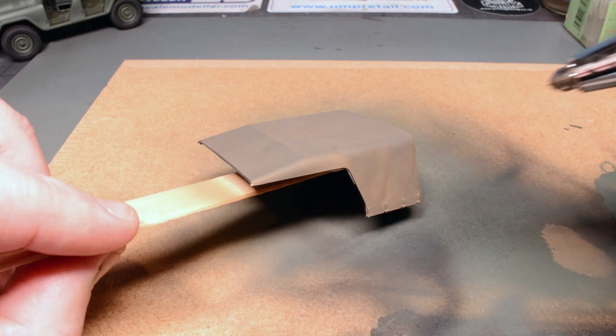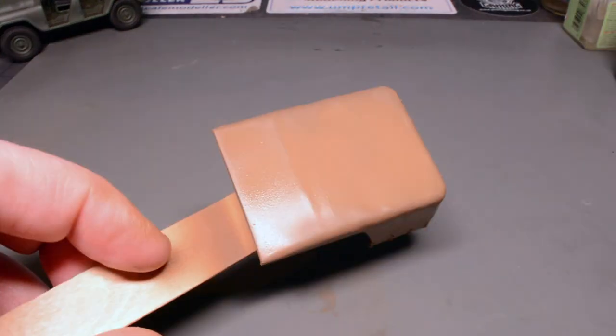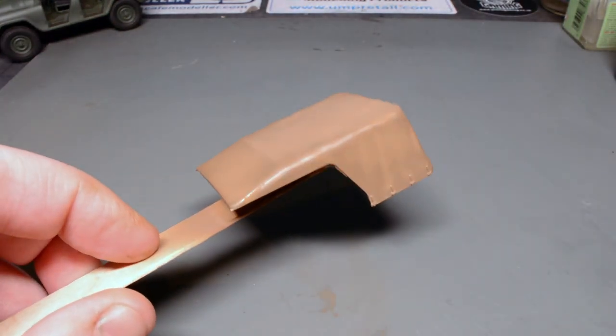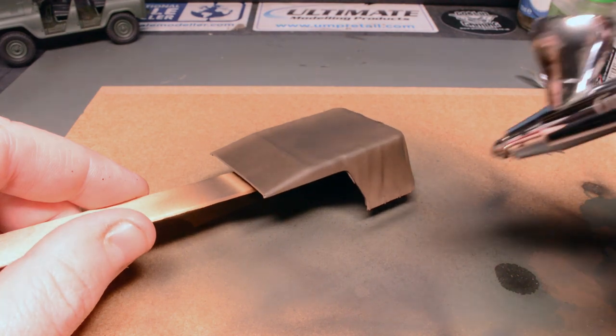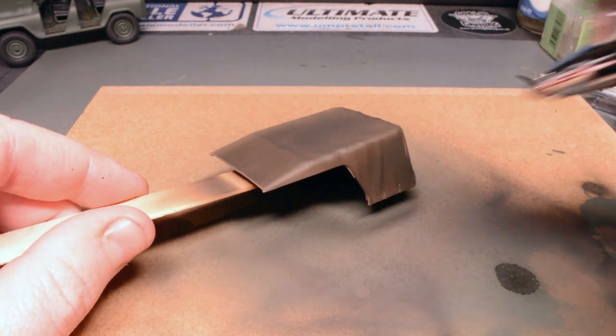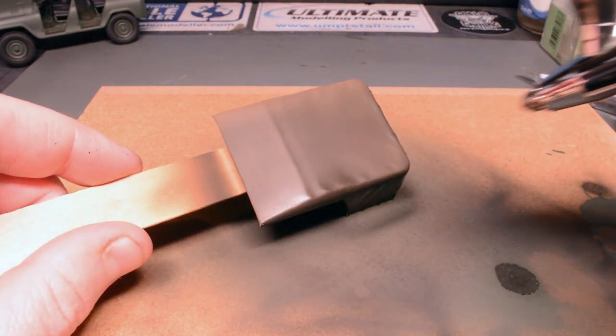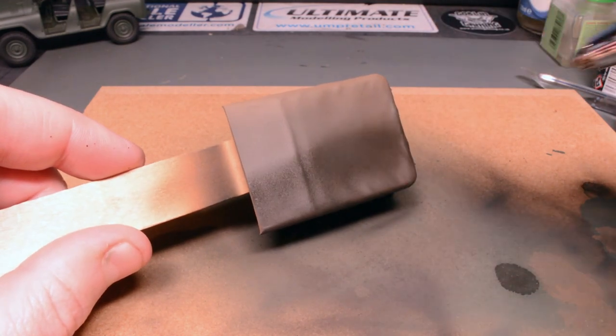After thinning the paint with Ultimate Modelling Products Airbrush Thinner and giving it a good airbrushing, even though the paint had settled down really well and it did look good compared to the sheet in the kit, it was totally the wrong colour. I had a very strong word with myself and then mixed up a dark greenish grey using Abaddon Black, Skull White and a little bit of Death World Green all from Citadel and thinned with UMP's airbrush thinners and repainted the roof.